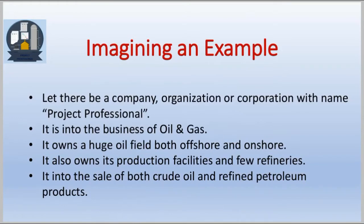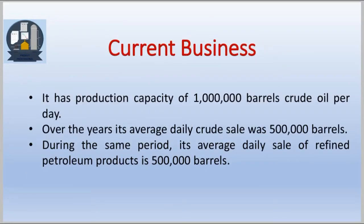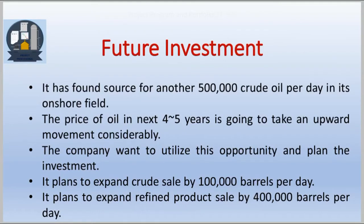To elaborate in a simplified way, let us consider an imaginary company named Project Professional. It is into the business of oil and gas. It owns huge oil fields both offshore and onshore, its own production facilities and a few refineries, and is into the sale of both crude oil and refined petroleum products. The company has a production capacity of 1 million barrels per day, with an average daily crude sale of 500,000 barrels and an average daily refined petroleum products sale of 500,000 barrels.